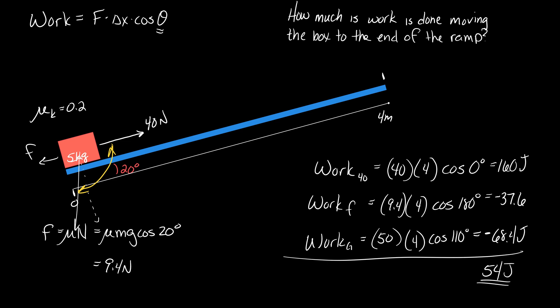That's positive. Which means, when the box makes it up here, it has 54 joules of energy. That must all be kinetic energy. If there's any net work done, the net work has to equal the change in kinetic energy.